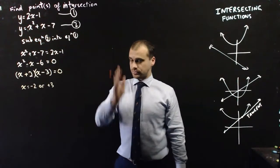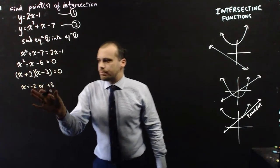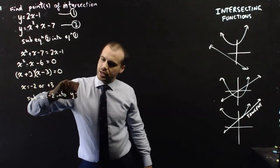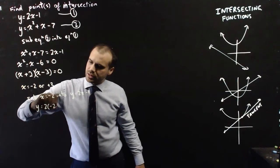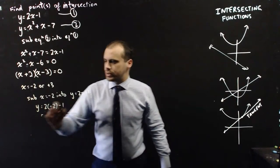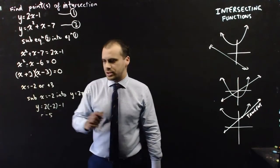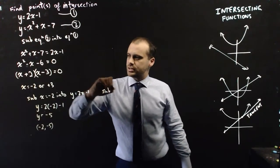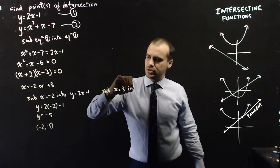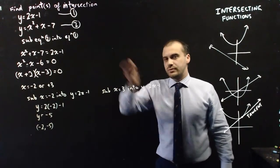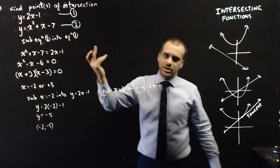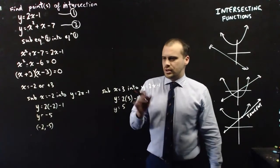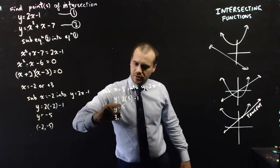The points of intersection are at x equals negative 2 and x equals 3. Now we sub both solutions back into y equals 2x minus 1. Subbing x equals negative 2 gives y equals 2 times negative 2 minus 1, which is negative 5. So one point is (negative 2, negative 5). Subbing x equals 3 gives y equals 2 times 3 minus 1, which equals 5. So our second point is (3, 5).